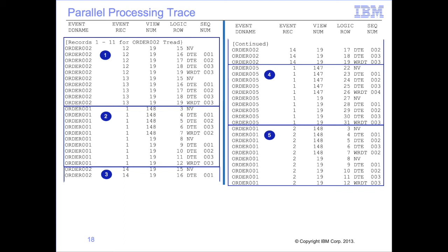In this example: first, the ORDER002 thread begins processing and processes input records 1 through 13 for view 19 before any other thread processes. Second, it stops processing for a moment and ORDER001 begins processing, but only completes one input record for views 148 and 119 before stopping. Third, ORDER002 picks back up and processes record 14 for its one view. Fourth, ORDER005 finally begins processing, completing input record 1 for both views 147 and 119. Fifth, ORDER005 begins processing again record 2 for both views 148 and 119.